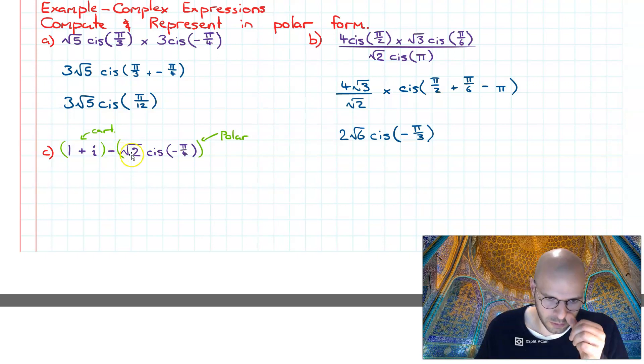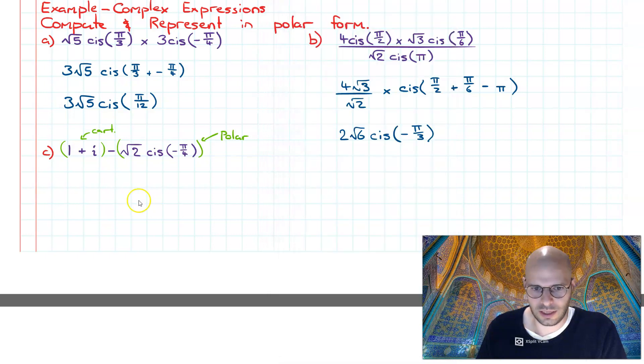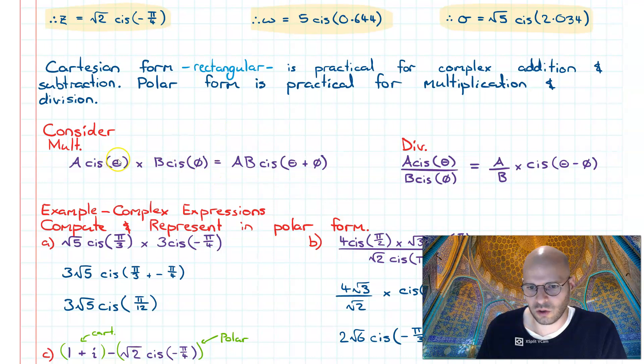Now the simplification process on this one is going to be better if we convert both of these expressions into their Cartesian form. The reason for this is that polar form is really efficient when we're doing multiplication and division.